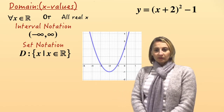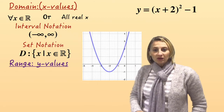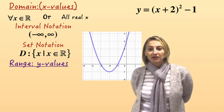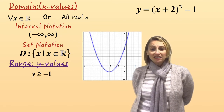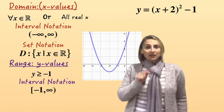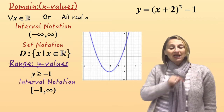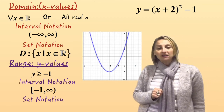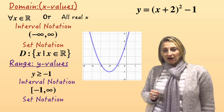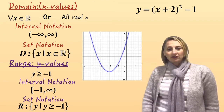Now let's do the range. If we take a look at this diagram, you can see that the y values are only the ones above y equals minus one. So we know that the range is y ≥ minus one — be careful, it can actually equal minus one. And in interval notation, it goes from minus one to infinity. Remember this one can actually include the minus one, so we put square brackets around the minus one, and then on the right-hand side of the infinity we put round brackets because it doesn't equal infinity. And in set notation: R colon curly brackets, y such that y is greater than or equal to negative one. Close the curly brackets.